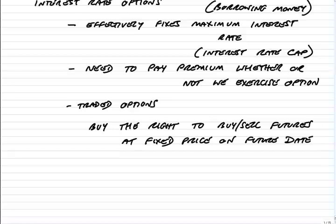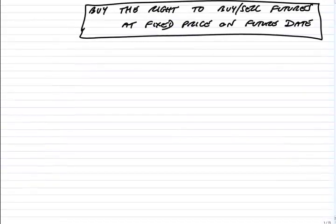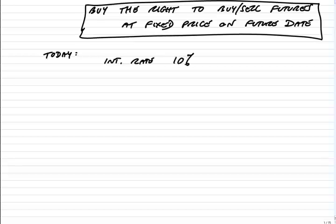That's what the option is, and that's what makes it a little bit difficult for some people to get to grips with. What we're going to buy is the right to buy or sell futures at a fixed price on a future date. Before we look at a proper example, just suppose I told you that today the interest rate is 10%. In a perfect world, the futures price would be 90.